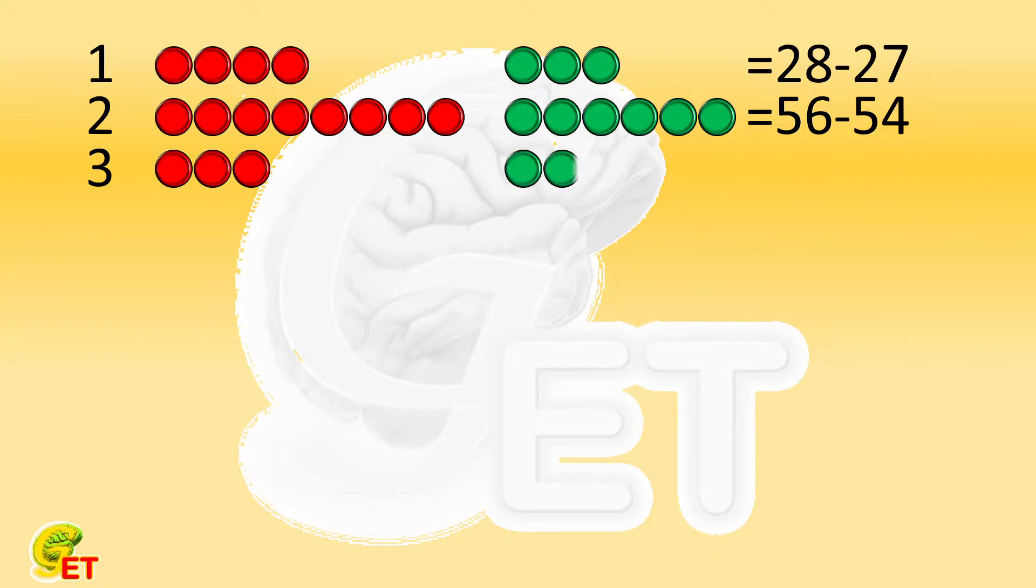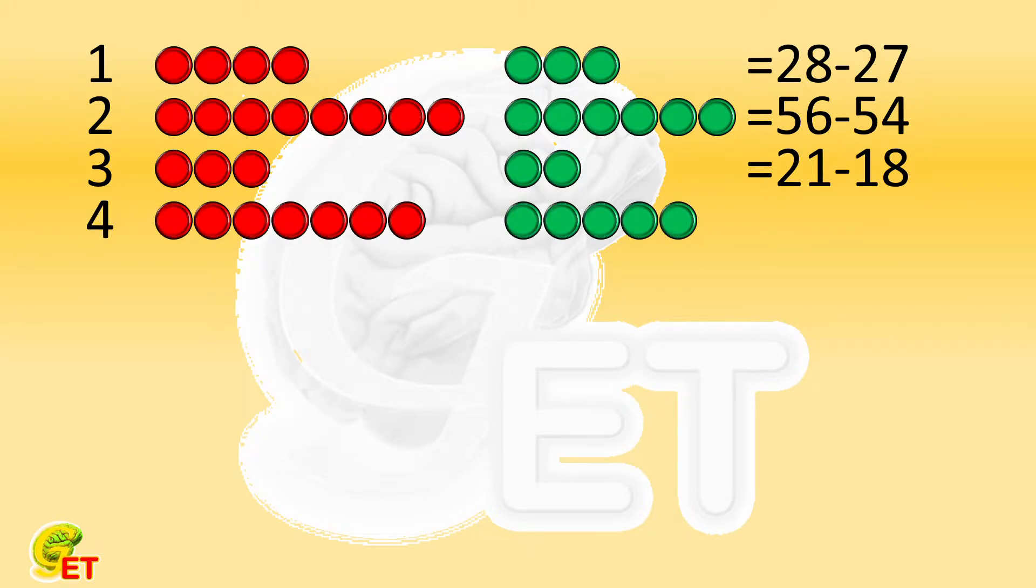The third floor, red for 3 times and green for twice. 21 minus 18 equals 3. The fourth floor, red for 7 times, green for 5 times. 49 minus 45.